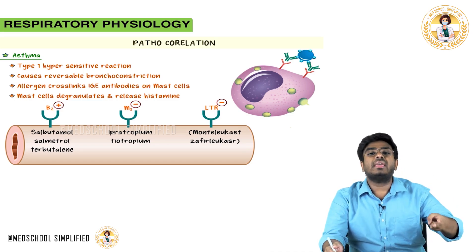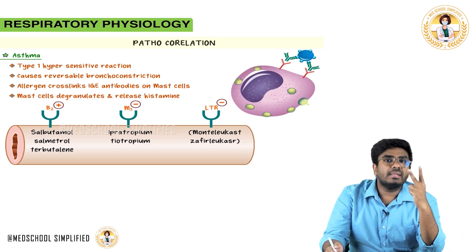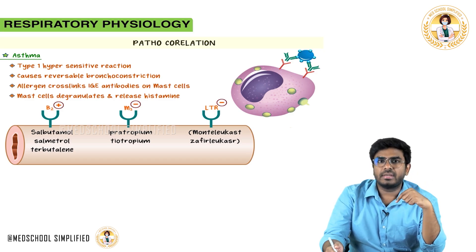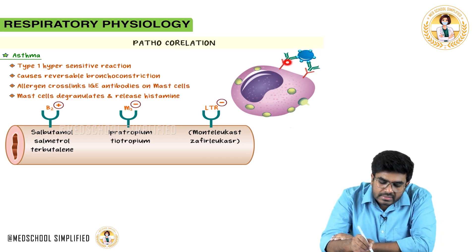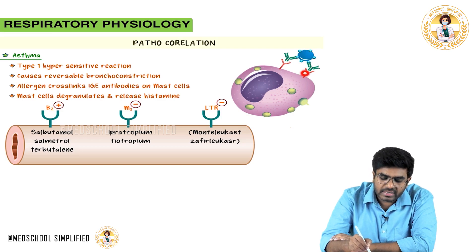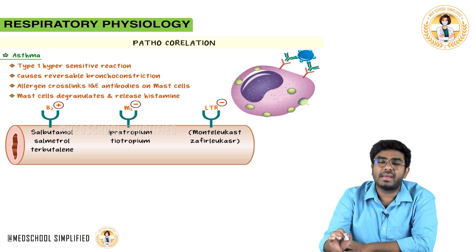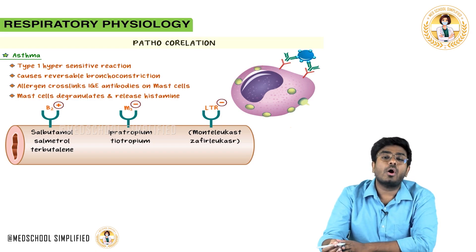When the same pollen enters the bronchial tree a second time, it causes cross-linking of the IgE antibodies. Cross-linking activates the mast cells, which degranulate and release histamine. This histamine causes reversible bronchoconstriction.